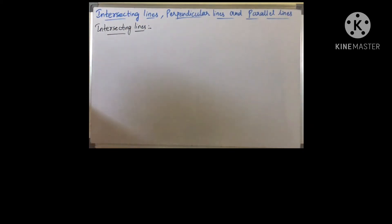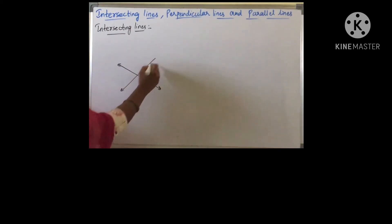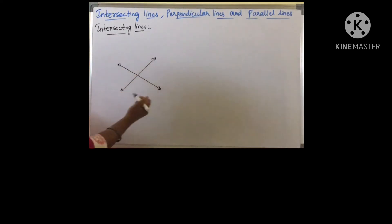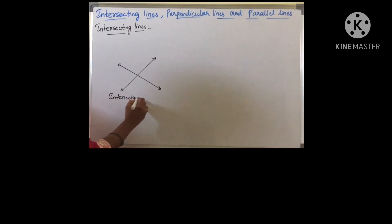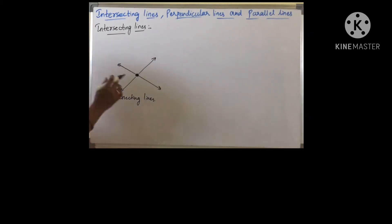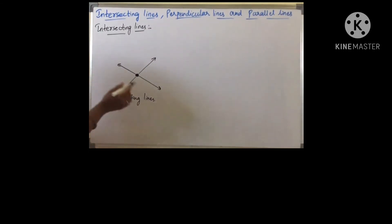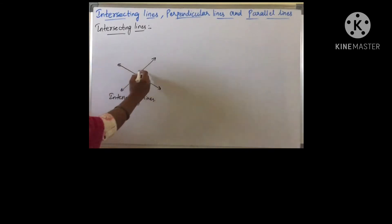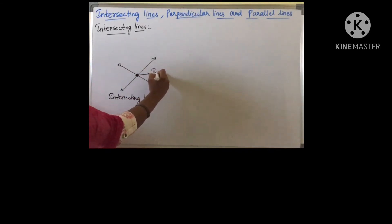When two lines cross each other — this is one line and this is one line — when the two lines cross each other in a plane, they are called intersecting lines. These are called intersecting lines and they are having a common point. This line and this line is intersecting at this point. So the intersecting lines share a common point which exists on all the intersecting lines, and this is called the point of intersection.